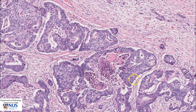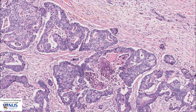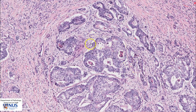When we have this punched-out appearance of multiple rounded gland openings in a larger rounded structure, this is known as a cribriform architecture. Here is another area where we can very clearly see the cribriform architecture, composed of glands that share walls and have these multiple rounded openings.